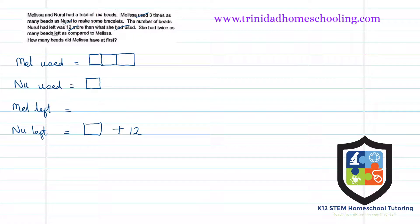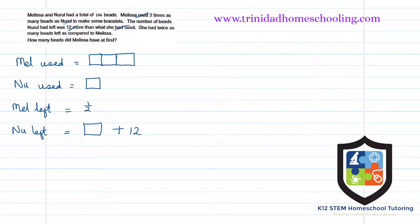She had twice as many beads left as compared to Melissa. So if Neural had twice as many beads left as Melissa, it means Melissa was left with half of what Neural had — which is half of the used portion plus half of the 12, which is 6.